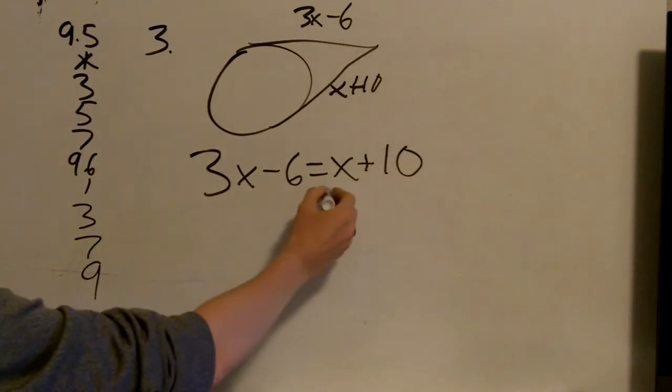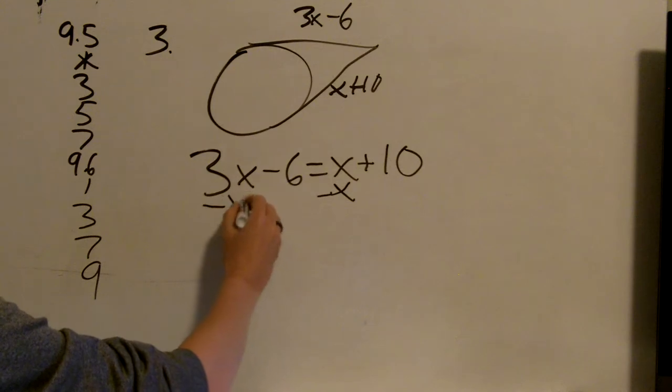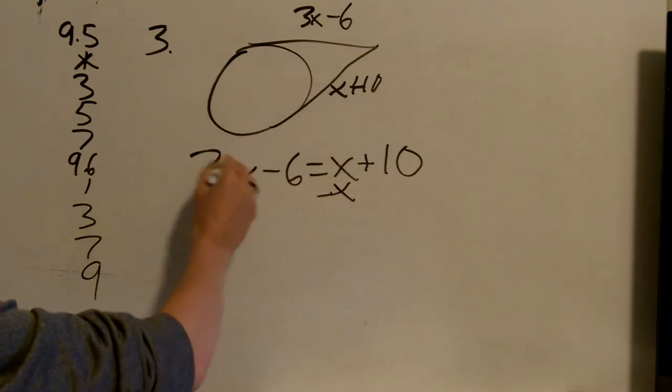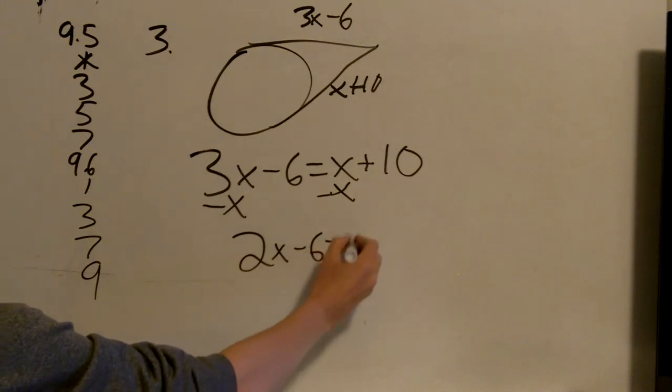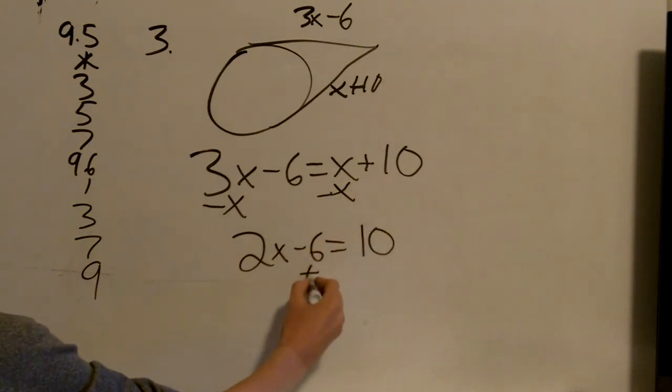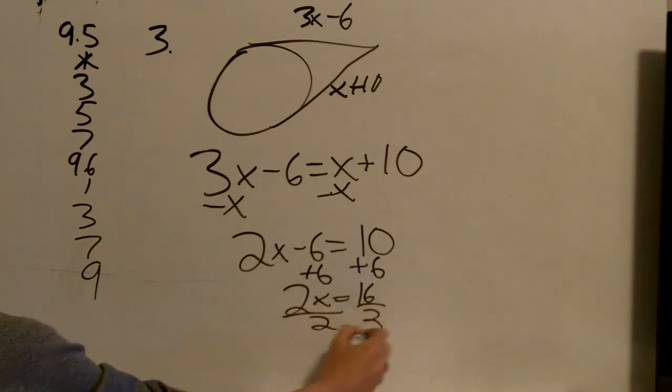So I'm going to subtract this x from both sides, which is 1x, so 3x minus 1x is 2x. Then I'm going to add 6 to both sides. 2x equals 16. Divide both sides by 2. x equals 8.